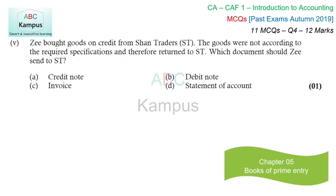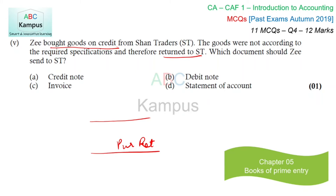Next question: goods were bought on credit from ST traders. The goods were not according to the required specification and were returned to ST. Which document should be sent to ST? When you bought the goods, you recorded a purchase. When you return the goods, you record a purchase return — purchase return is credited and ST (the party) is debited. When you debit a party, you issue a debit note; when you credit a party, you issue a credit note. Since this is a purchase return entry and we have debited the party, we will issue a debit note to ST.